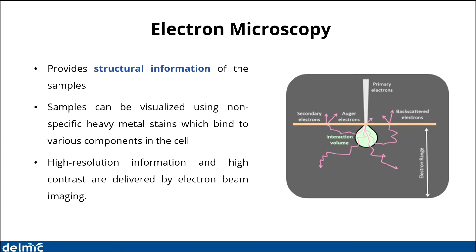Electron microscopy, on the other hand, is a technique which provides structural information about the sample. By tagging a sample with heavy metal stains, which are not specific but bind to pretty much everything in the sample, and by imaging such a sample in an electron microscope, you can get structural information. As shown in the schematic, if a high energy electron beam is incident on the sample, it scatters off these heavy metal molecules and generates a whole host of electron energies, from the low energy secondary electrons to the high energy backscattered electrons. The scanning electron microscope has the corresponding detectors to detect these electrons and form an image. The main advantage of electron imaging is its very high resolution, because the wavelength of these electrons is much smaller than the wavelength of light.